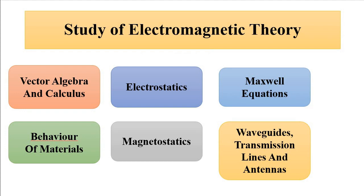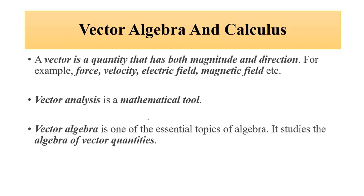The whole electromagnetic field theory study can be categorized into these parts: first, vector algebra and calculus — very important; then electrostatics, Maxwell's equations, the behavior of materials, magnetostatics, waveguides, transmission lines, and antennas. We'll move through all of these systematically.